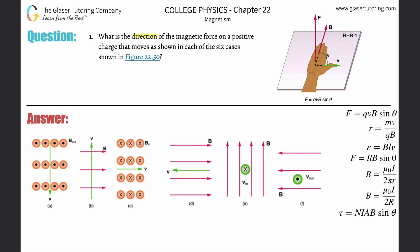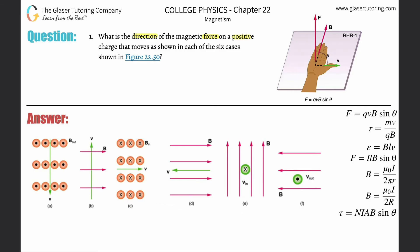What is the direction of the magnetic force on a positive charge that moves as shown in each of the six cases shown in figure 22.50? We have six cases labeled A through F, and we have to apply what's called right hand rule number one. There is a relationship between the force acting on a charge, the direction of the magnetic field, and the velocity of the moving charge.